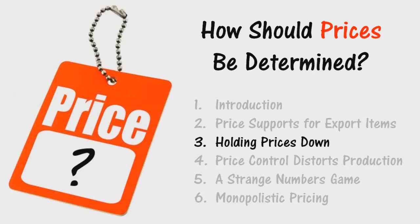These price changes — both absolute and relative — are in the overwhelming main both necessary and desirable. They are drawing capital, labor, and other resources out of the production of goods and services that are less wanted and into the production of goods and services that are more wanted. They are adjusting the balance of production to the unceasing changes in demand, producing thousands of goods and services in the relative amounts in which they are socially wanted. These relative amounts change every day, and therefore the market adjustments and price and wage incentives that lead to them must change every day.